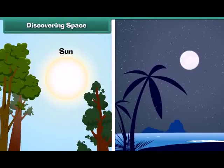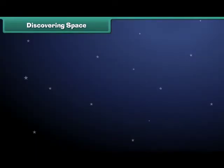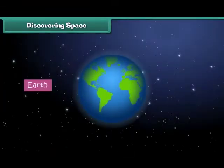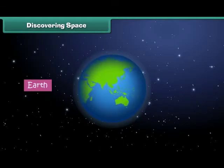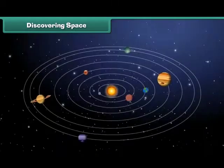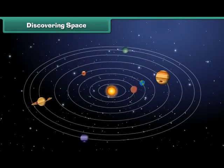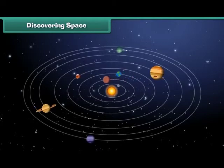The Sun, Moon and the stars that we see in the sky are all located in space. The Earth on which we live is also in space. Everything from the small dust particle to the large planet is placed in space.